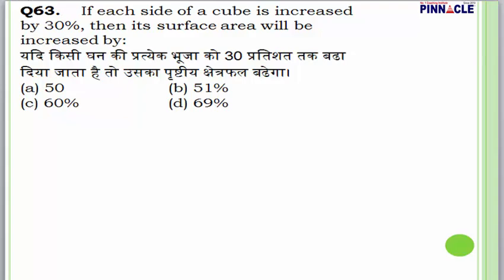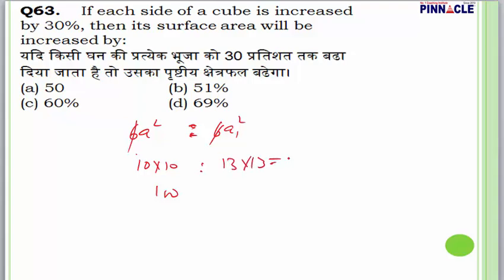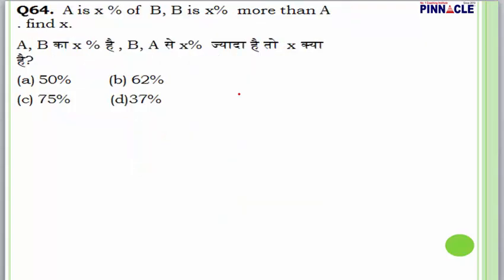Question 63: If each side of a cube is increased by 30%, surface area is 6a². If original side is 10, new side is 13, so new surface area is 169 compared to 100 — a 69% increase. Answer is D.